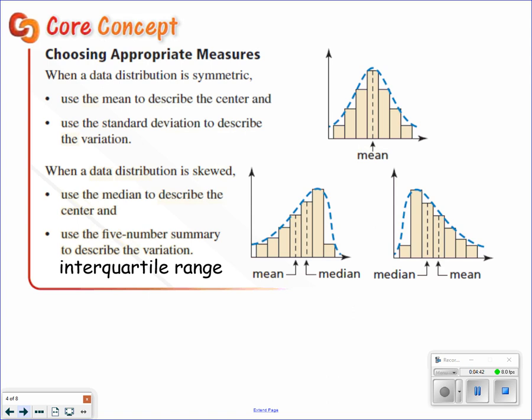Choosing the appropriate measure. I always tell everybody, if there's nothing that's being skewed, you should always use the mean or the average. However, if the data set is skewed, then you should use either the median or the five-number summary to describe your variation.